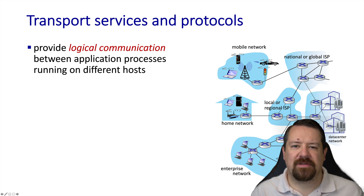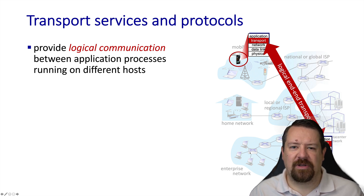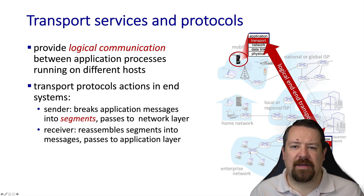Now let's get a handle on the services being provided by the transport layer. We call this providing logical communication between services running on different hosts. From the view of the two applications, they're communicating directly with one another, and the transport layer provides this abstraction so applications don't have to worry about what's happening in the network between the hosts. To do this, the transport layer performs segmentation and reassembly, breaking application messages into smaller units transported in packets, and then reassembling them before handing them back to the application layer.